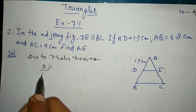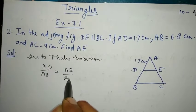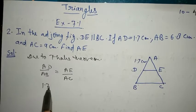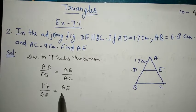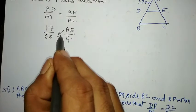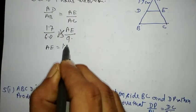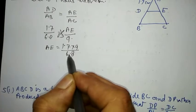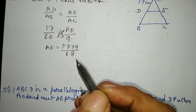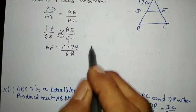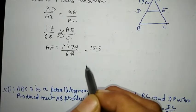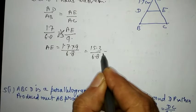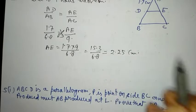AD upon AB is equal to AE upon AC. Substituting AD = 1.7, AB = 6.8, AC = 9 cm, cross multiplying: AE = 1.7 × 9 / 6.8 = 15.3 / 6.8 = 2.25 cm.